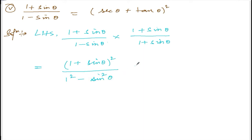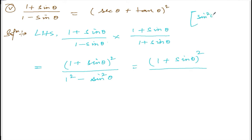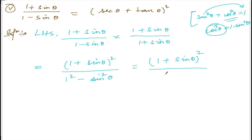So we have (1 + sinθ)² divided by (1 - sin²θ). Now using the identity sin²θ + cos²θ = 1, if we transfer sin²θ, it becomes 1 - sin²θ = cos²θ. So the denominator becomes cos²θ.